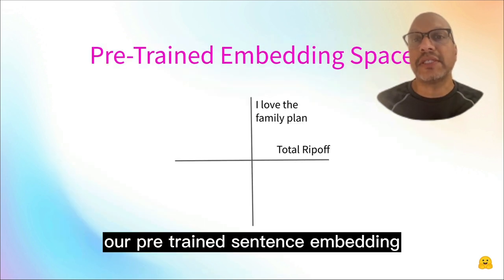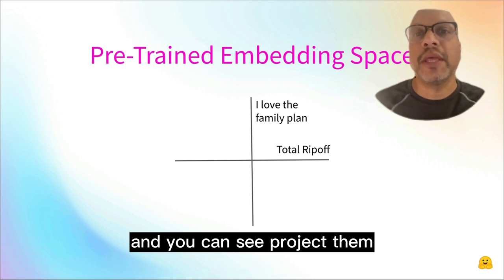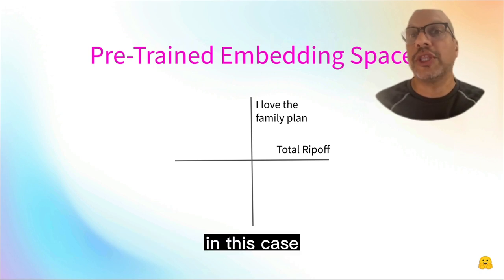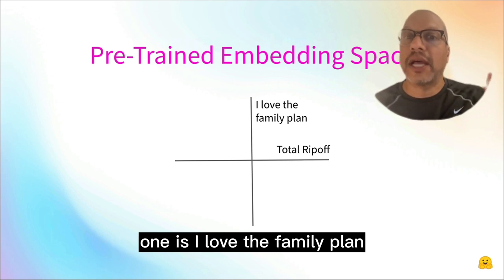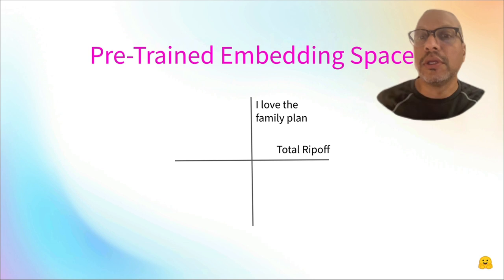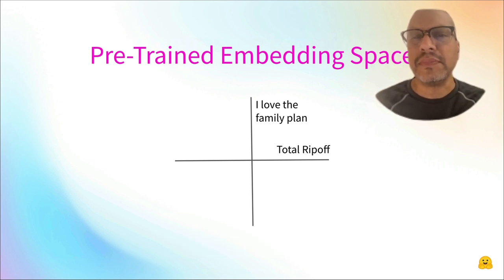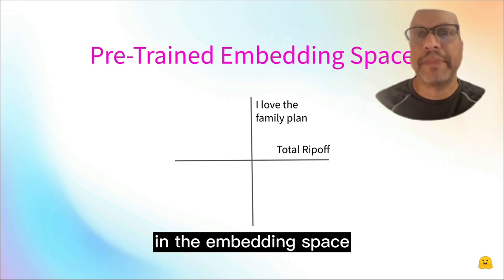Our pre-trained sentence embedding is going to take two different text examples and project them into a two-dimensional representation. In this case, I have two classes that are very different. One is 'I love the family plan' — someone that's not likely to churn. The other is 'Total ripoff' — someone that churned.